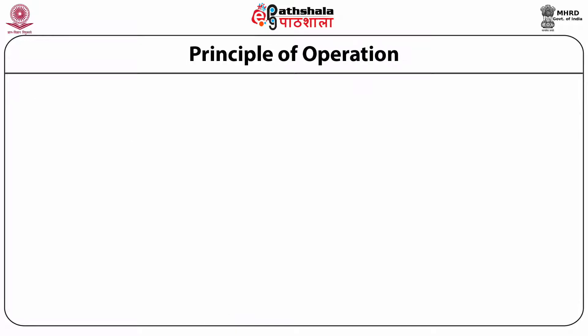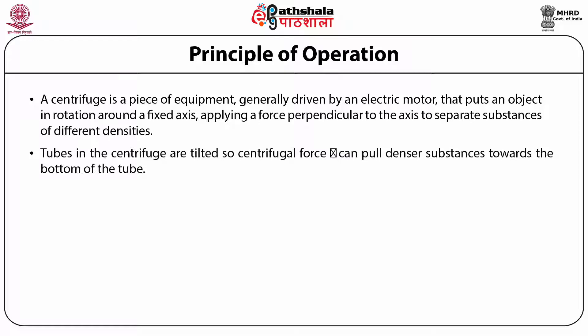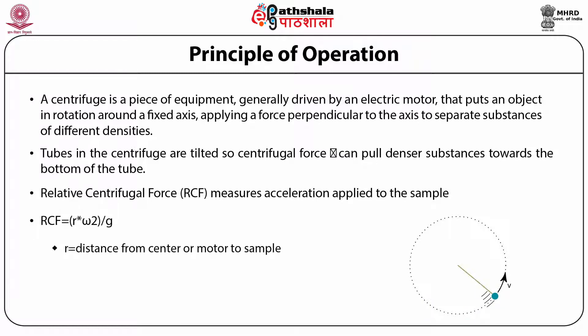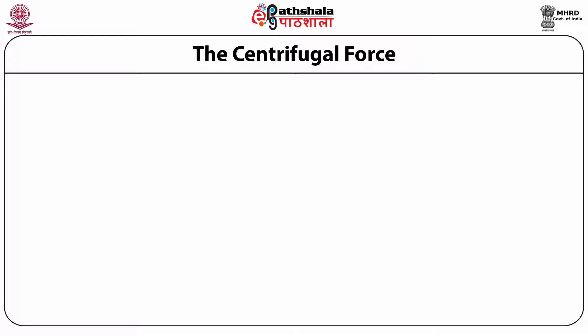We will discuss the principle of operation of centrifugation technology. The centrifuge is a piece of equipment driven by an electric motor that puts an object in rotation around a fixed axis, applying a force perpendicular to the axis to separate substances of different densities. Tubes in the centrifuge are tilted so the centrifuge can pull the denser substance towards the bottom and the lighter substance to the top. There is an equation: RCF = R × ω² / g, where R is the distance from the center of the axis of rotation, ω is the angular velocity, and g is gravity (9.8 m/s²).